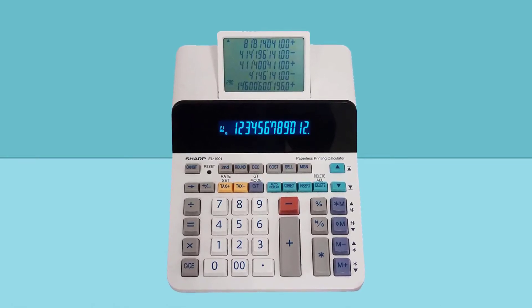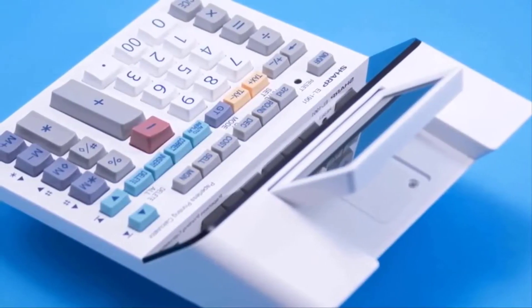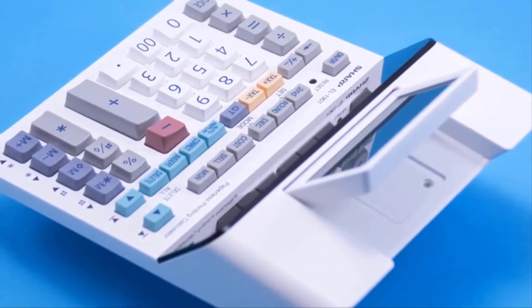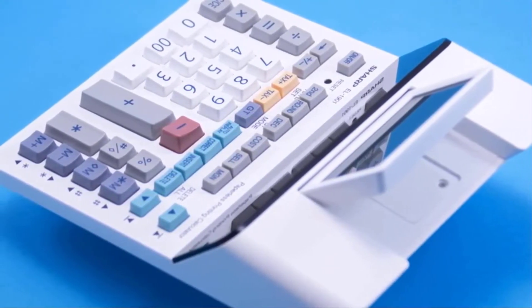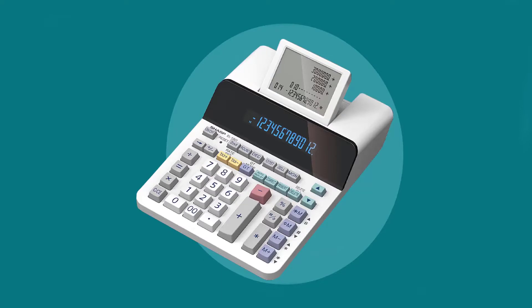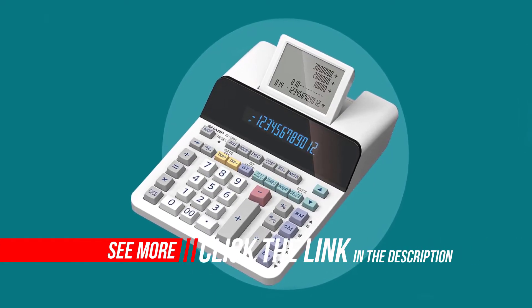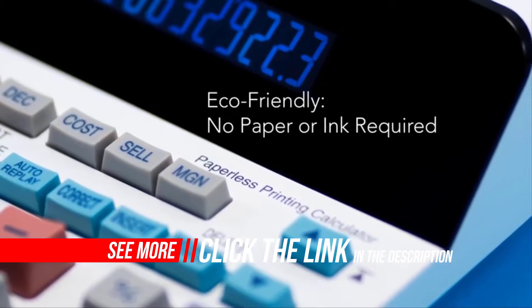5-line secondary LCD lets you scroll back and forth up to 300 lines to refer back to your previous calculations. Check and correct function allows you to quickly modify and recalculate entries for fast, simple updates.